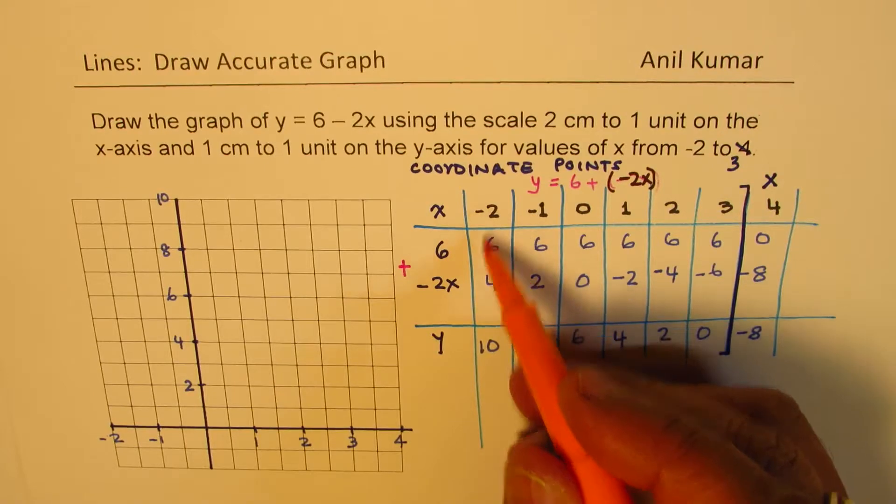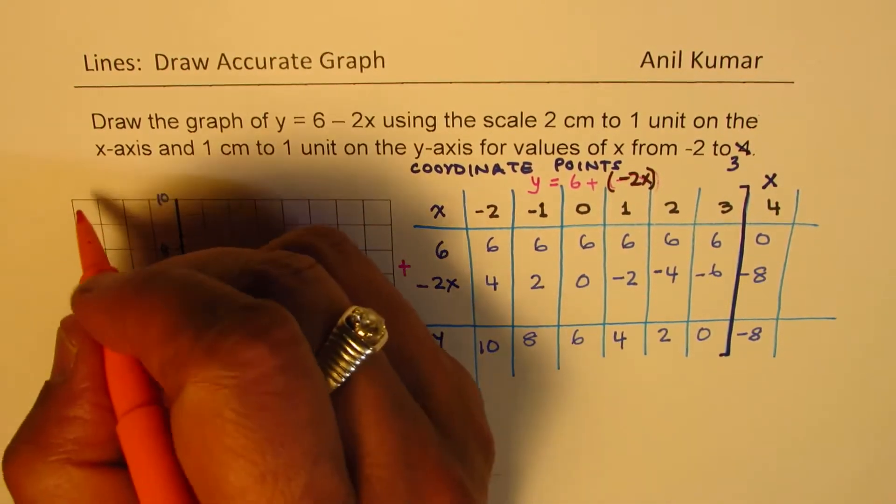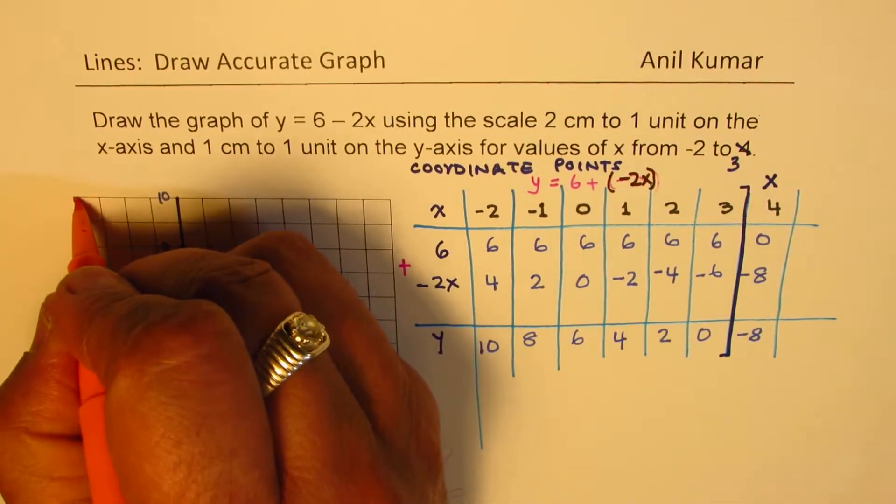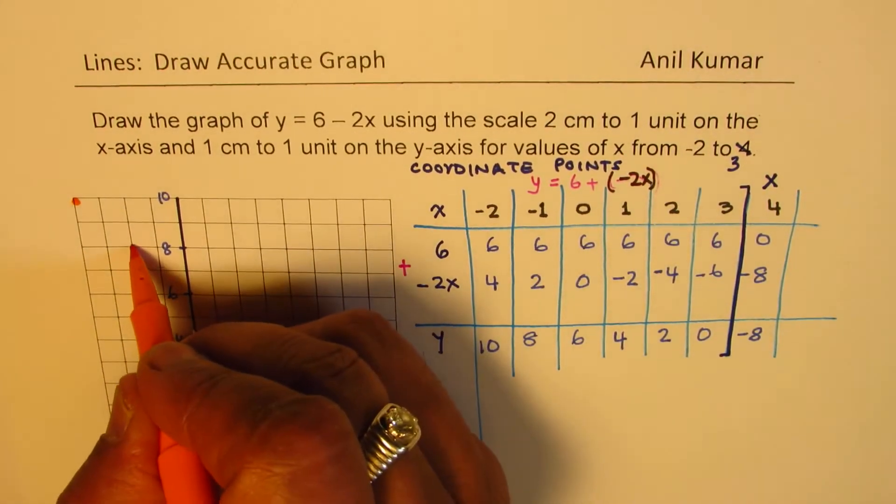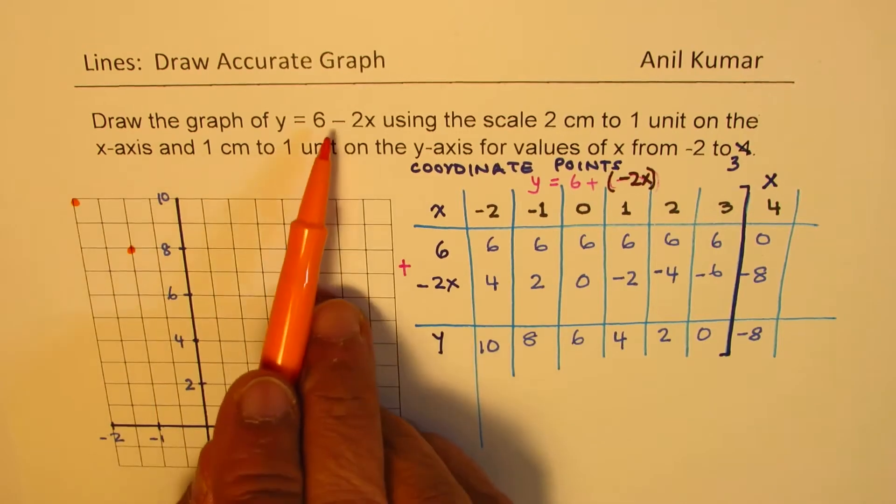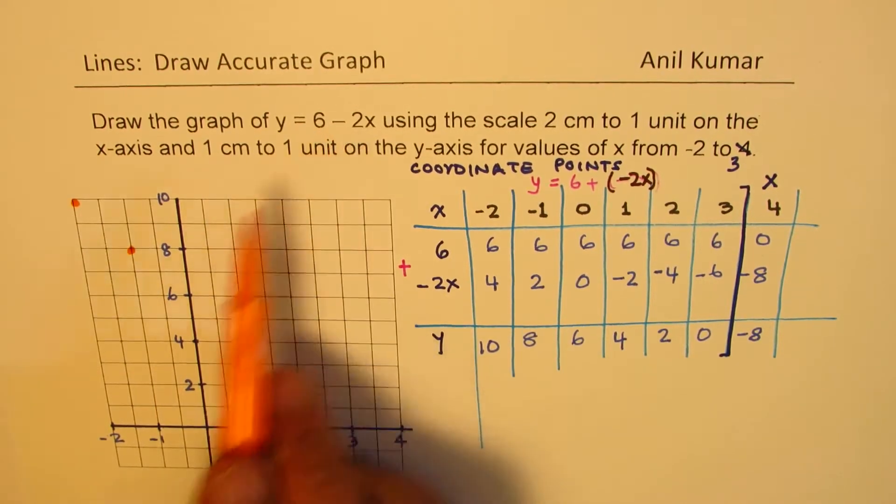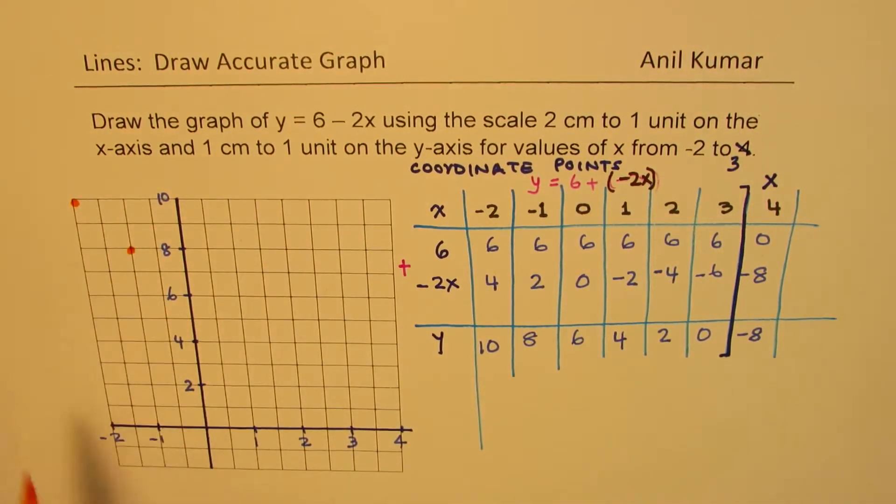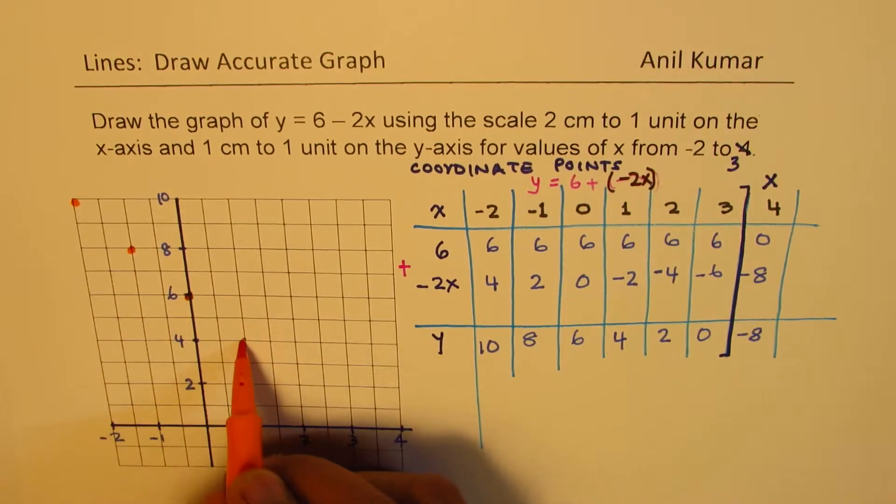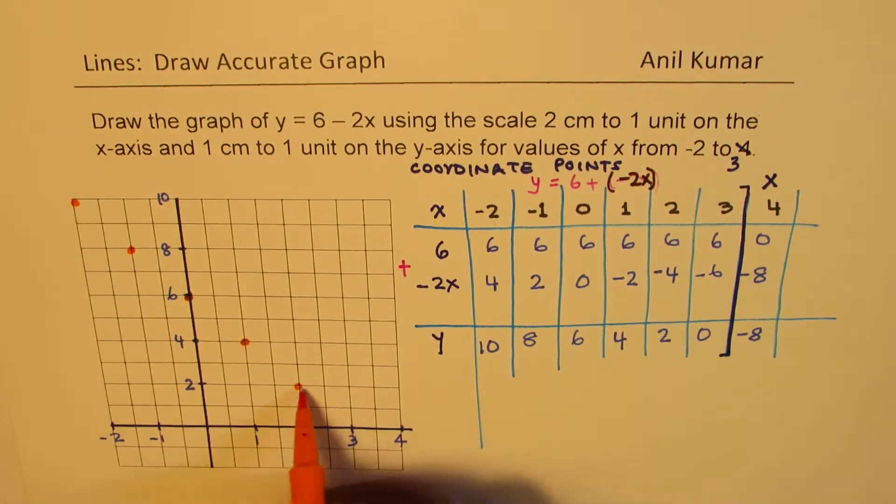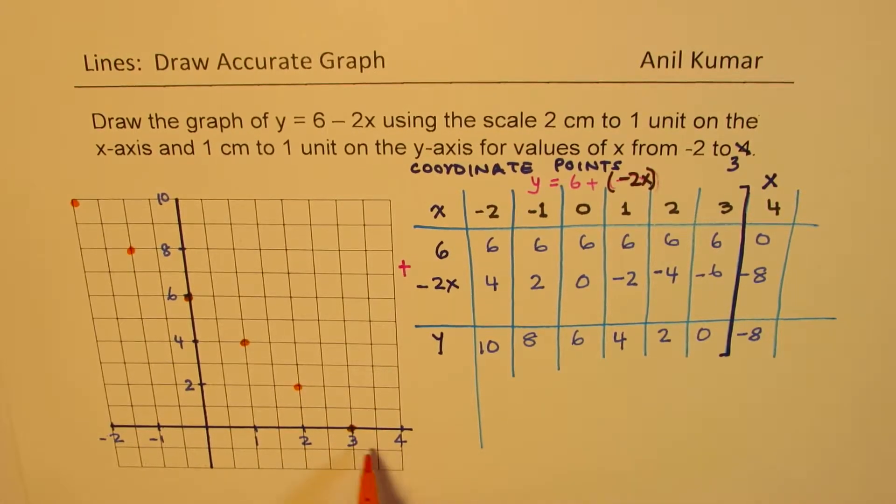So first point is minus 2, 10. So at minus 2, we have a point which is right there. Then at minus 1, it is 8. So at minus 1, it is 8. You can see that the slope is minus 2. So we are coming down like this. You can actually keep on moving like this to get your points. And then check with the values. So I think this calculation is wrong.